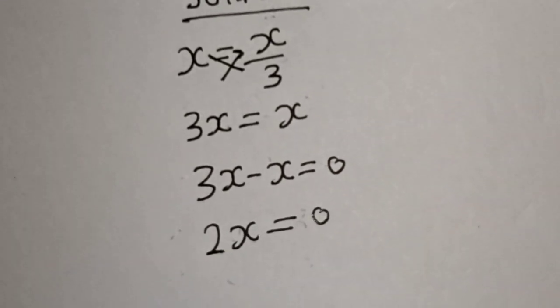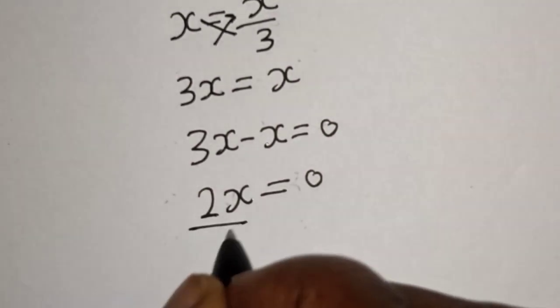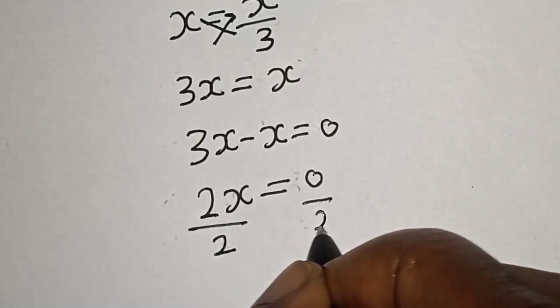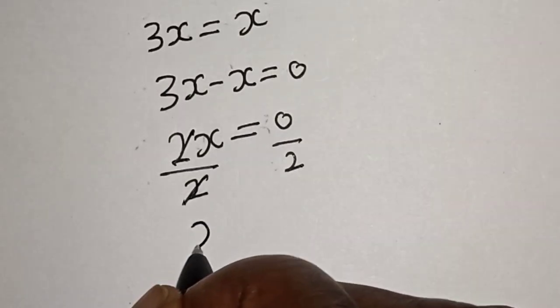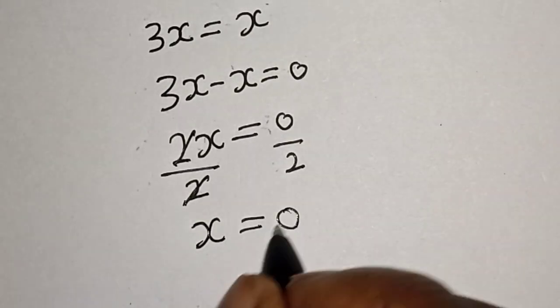Let's divide both sides by 2. Divided by 2, divided by 2. This will cancel. Therefore, x equals 0.